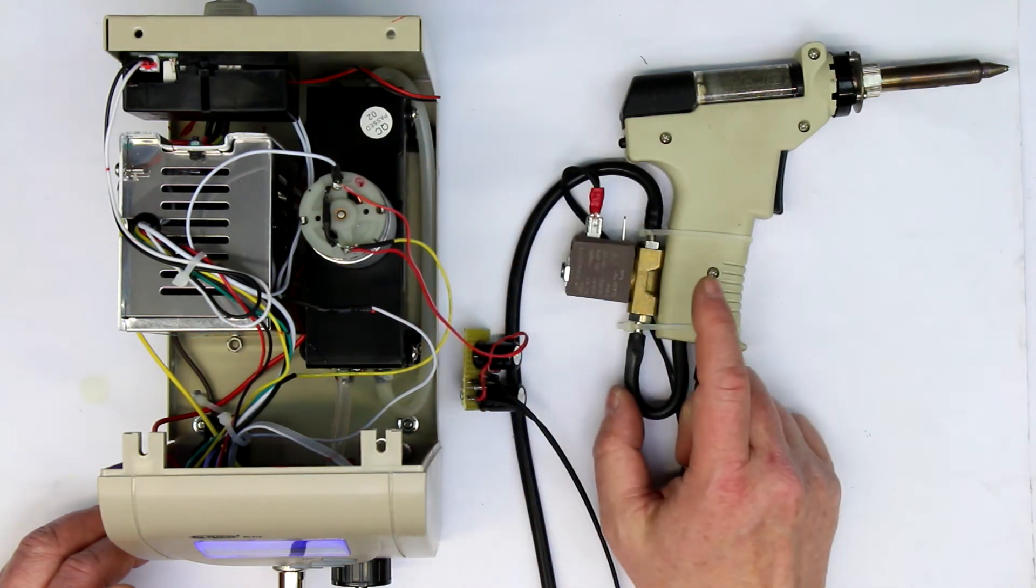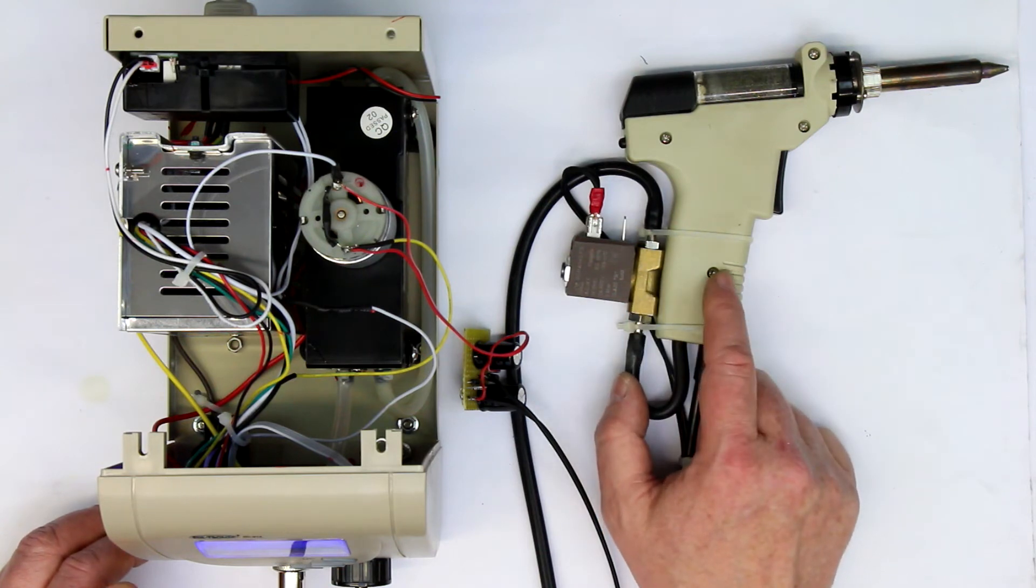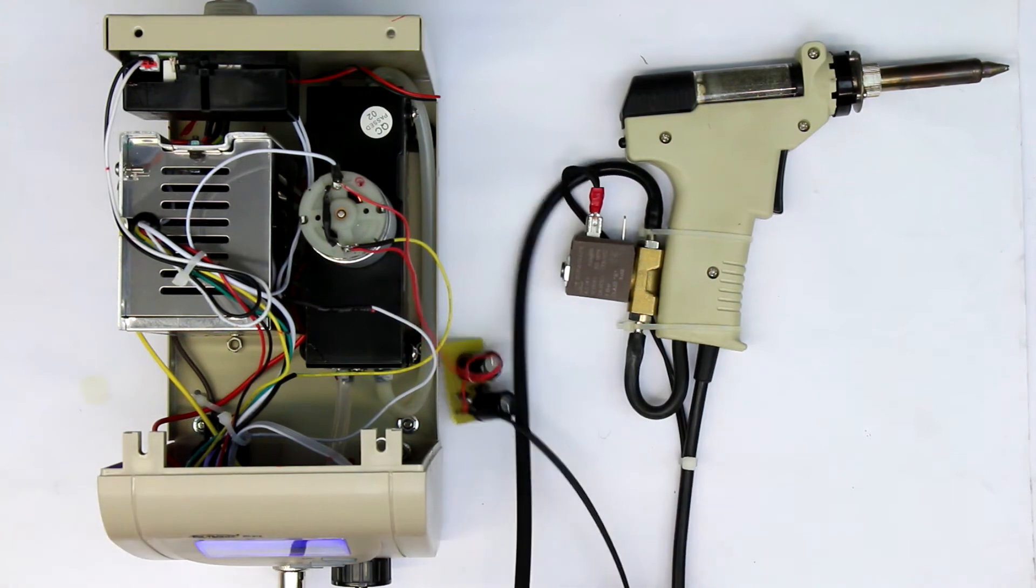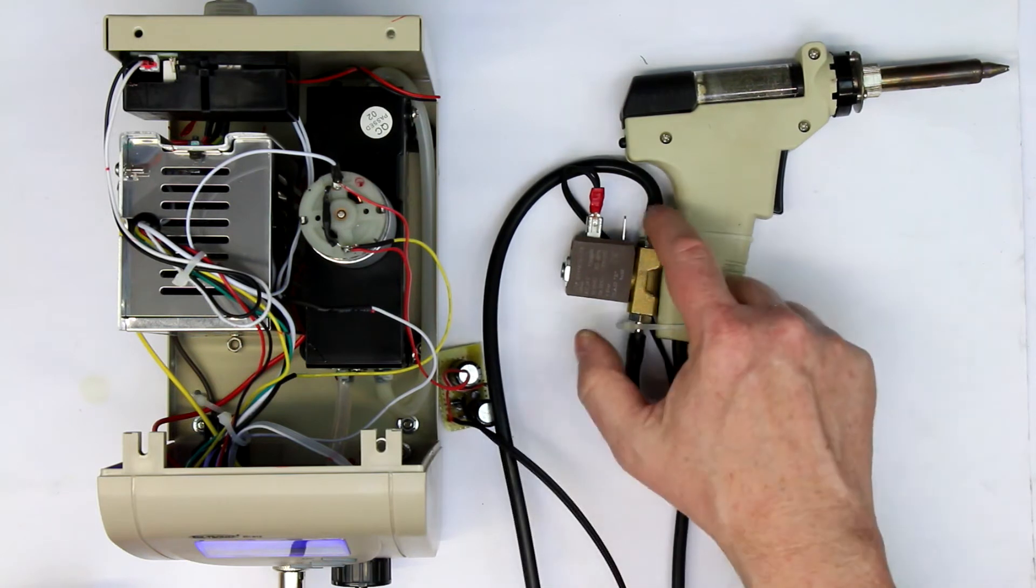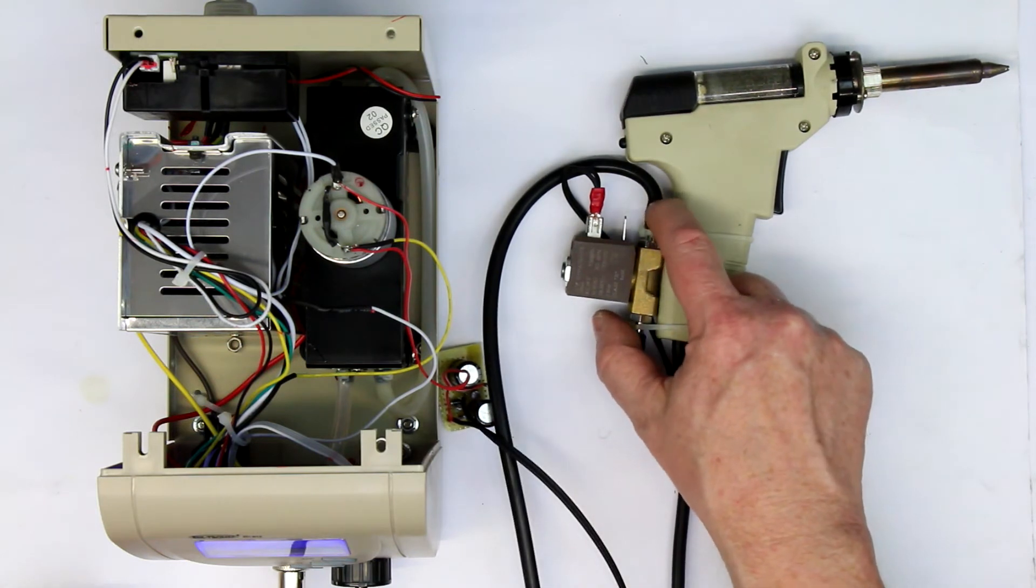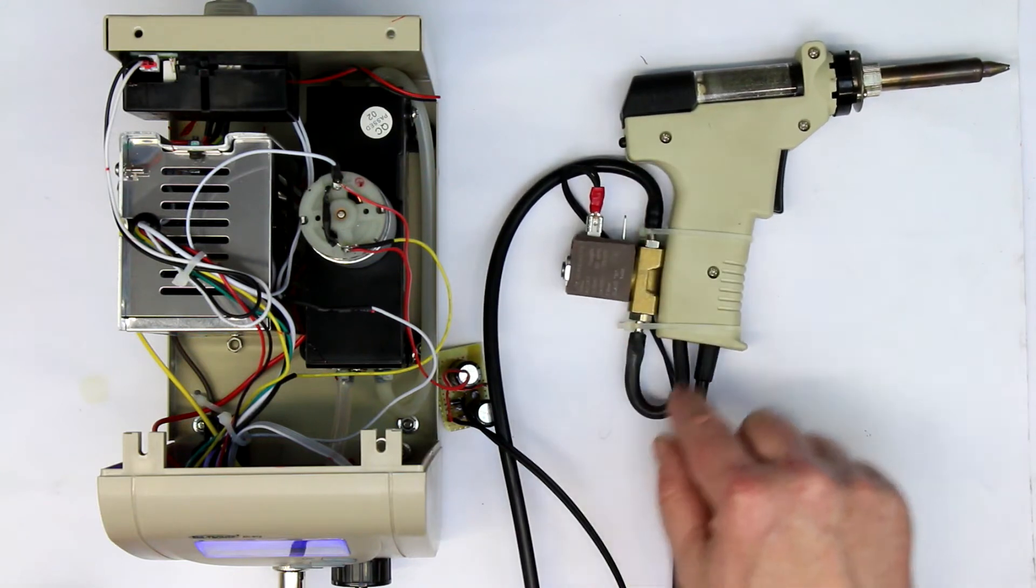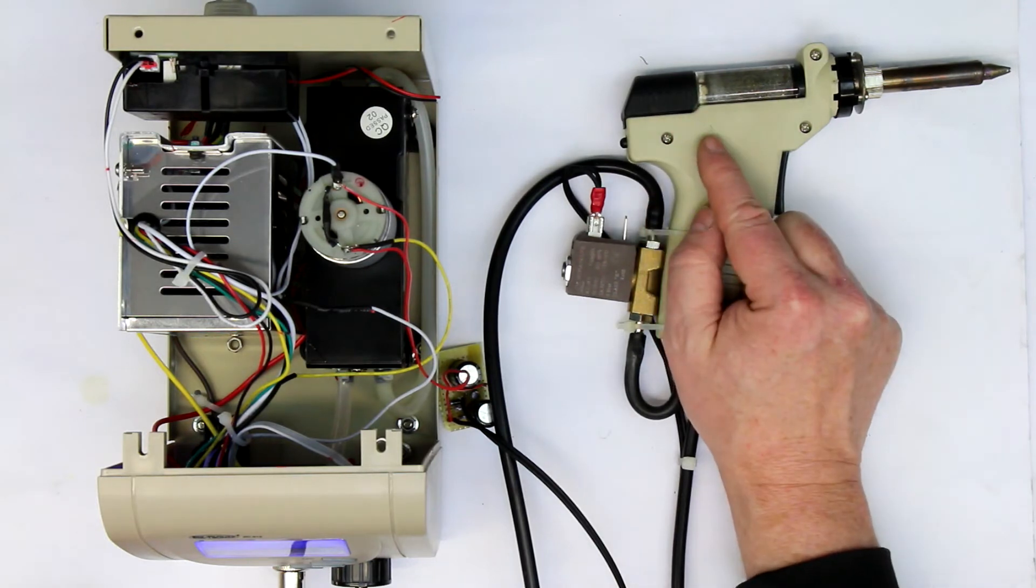And secondly, by placing the valve directly at the desolder gun, the vacuum pump doesn't have to pull the air out of the vacuum hose first. And the vacuum is then fully present here at this point. And the only part that remains is here the way up to the top of the desolder gun.